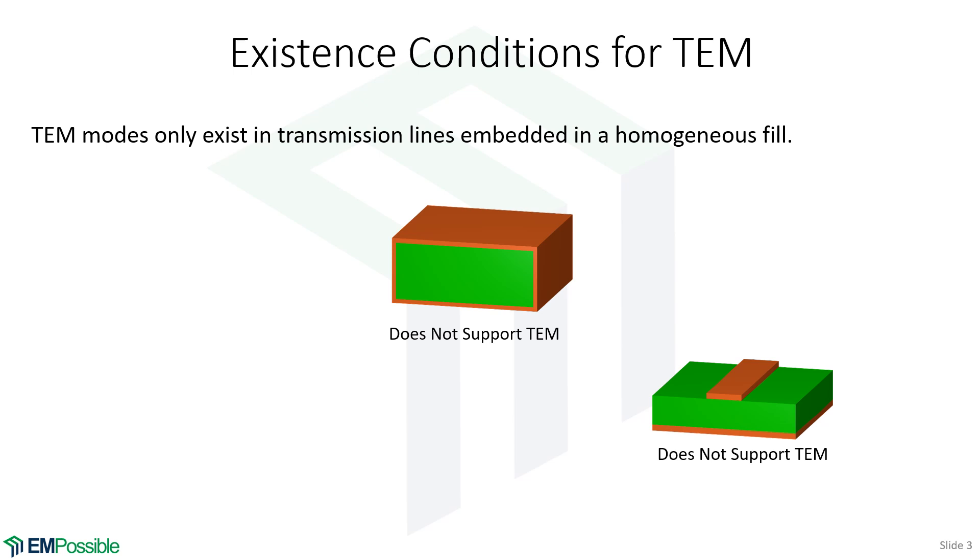What about a microstrip? Well, this is a transmission line. It has two conductors. But it does not have a homogeneous dielectric. If you can imagine for a moment, electric field lines fringing from the conductor into the air and down into the dielectric, it's punching through two different dielectrics. That is inhomogeneous. This does not support a TEM mode. It does support something very close to a TEM mode, but it does not support a true TEM mode.